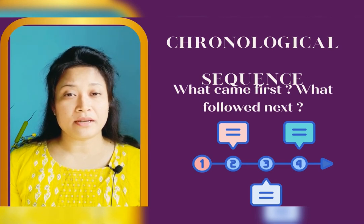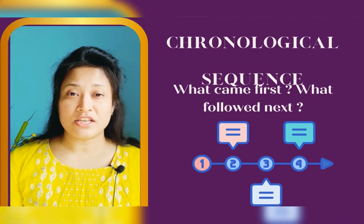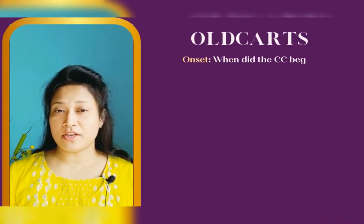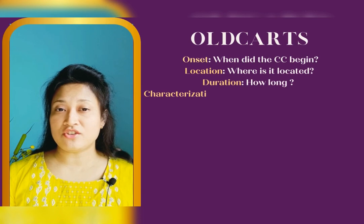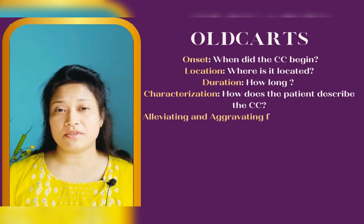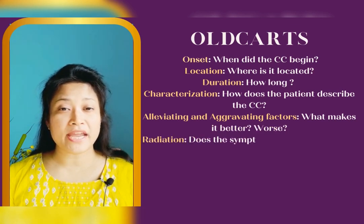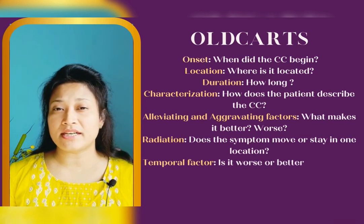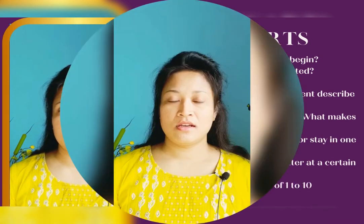It is important for therapists to focus on the quality and clarity of their patient's information rather than irrelevant details. An acronym used in SOAP format to organize the history of present illness is OLCARTS: O is onset, L is location, D is duration of symptoms, C is characterization of symptoms (how does the patient describe them), A is alleviating and aggravating factors, R stands for radiation (whether the pain or symptom moves or stays at one location), T is for temporal factors (whether symptoms get worse at a certain time of day), and S stands for severity, which can be rated on a scale of 1 to 10.